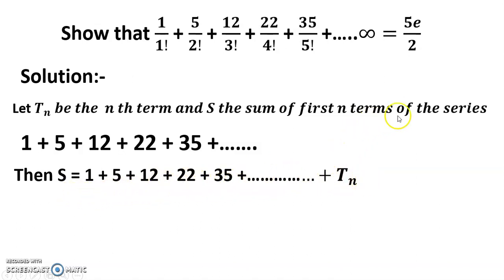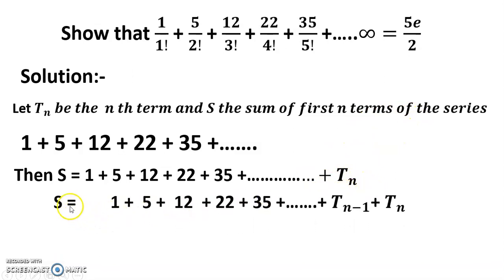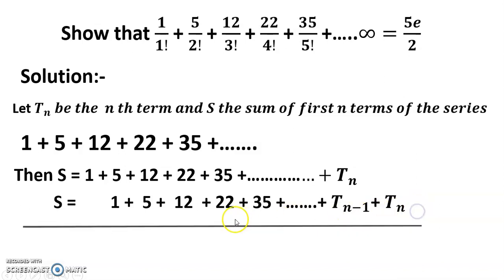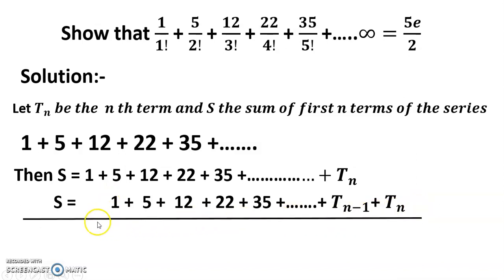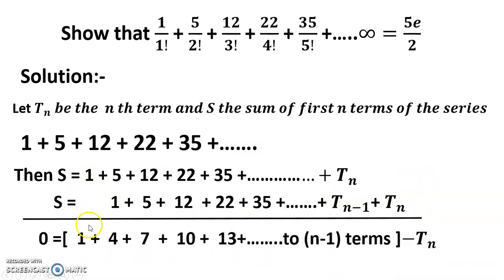The n terms of the series can be written as Sn, and I subtract using this technique: 5 minus 1 = 4, 12 minus 5 = 7, 22 minus 12 = 10, 35 minus 22 = 13, and so on up to minus Tn.